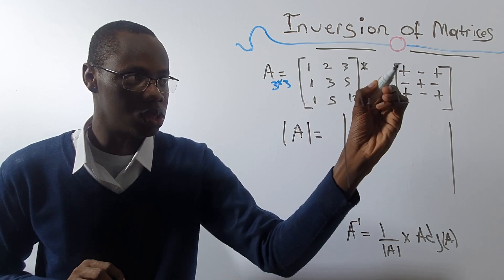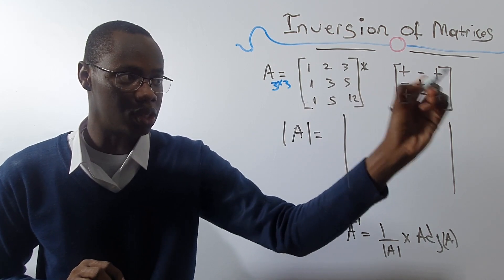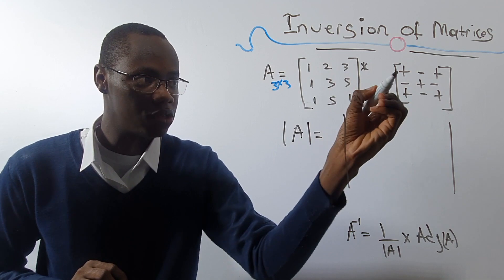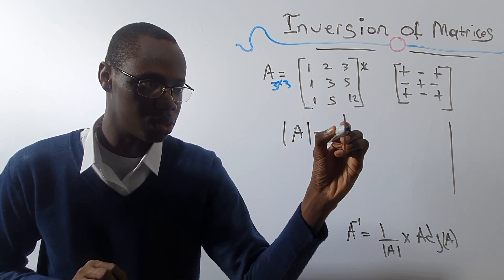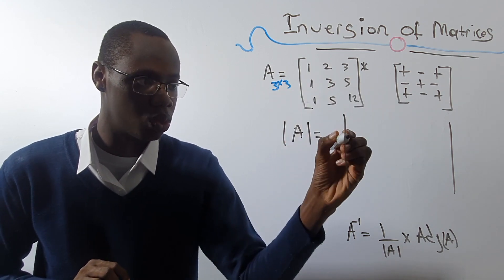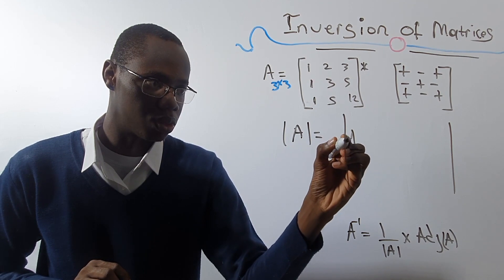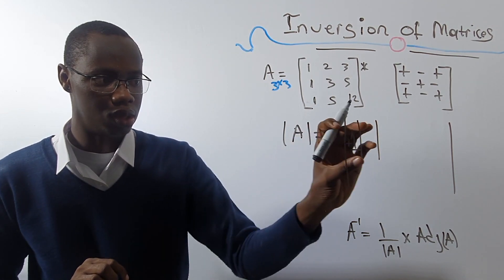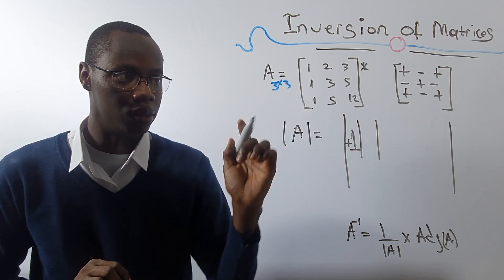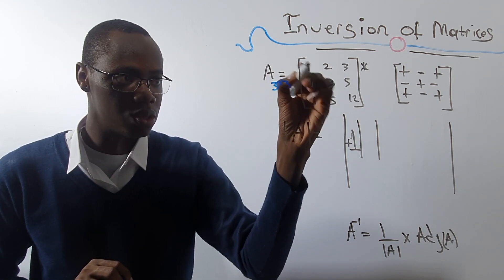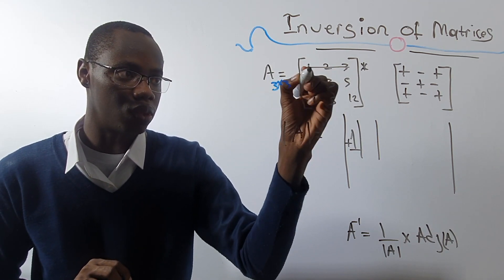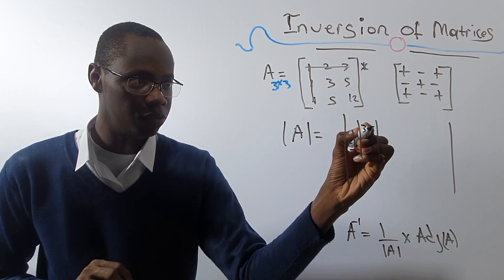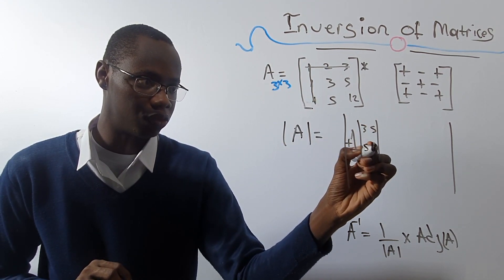I'm using the first row. The sign pattern is plus, minus, plus. So the first sign here will be plus 1. Now, what is the minor? To find the minor for this one, delete the row and the column. What are we left with? 3, 5, 5, 12.